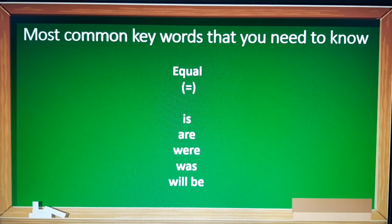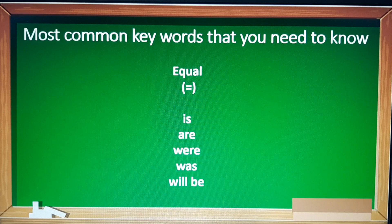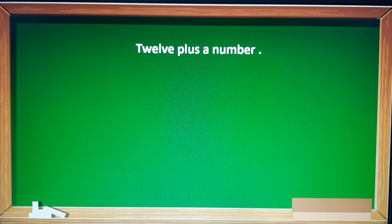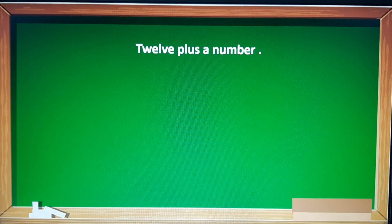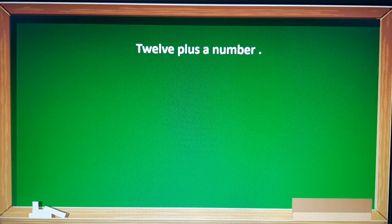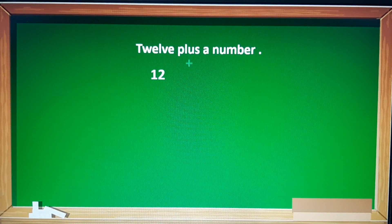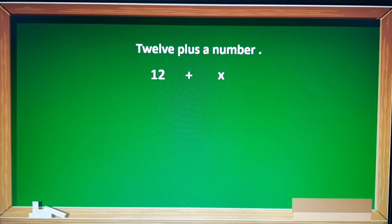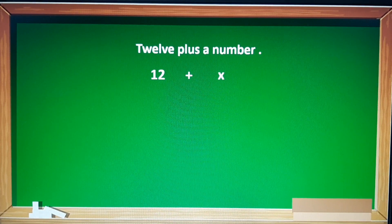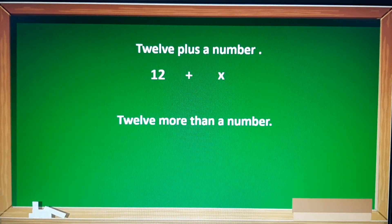Let's have a short illustration on how to translate verbal sentences to mathematical sentences. So, let's have an example number one: 12 plus a number. If we translate this into mathematical sentence, it will be 12 plus a number. So, 12 + x. X represents a number. You can use any letter in the alphabet.